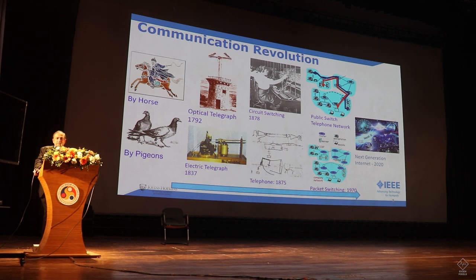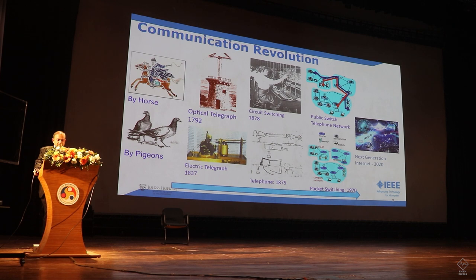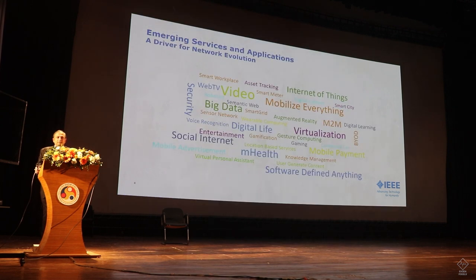At the same time, the public switched telephone network — PSTN — circuit-switched network was also running in parallel. A lot happened in between. We've now moved to next-generation internet. In 2020, 5G is getting deployed and people are thinking about 6G. And it's not only wireless — there are wired aspects and optics too.